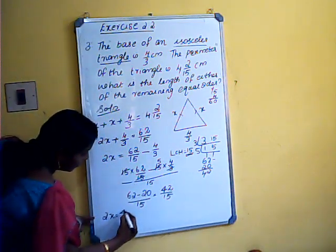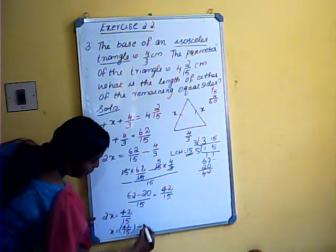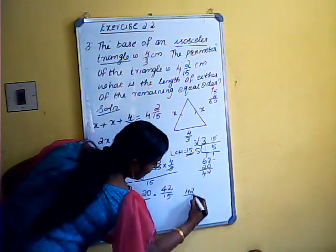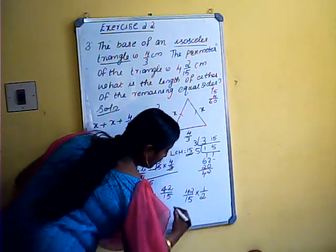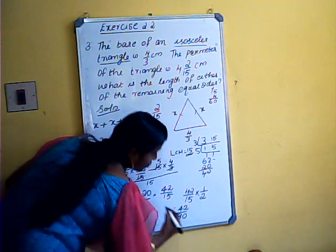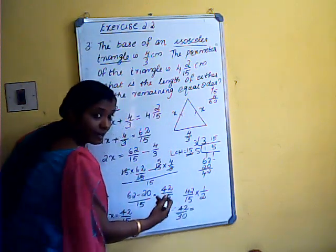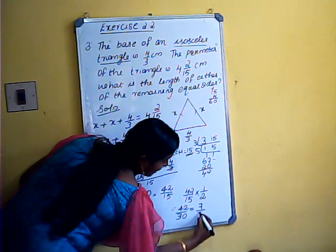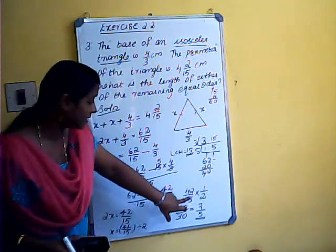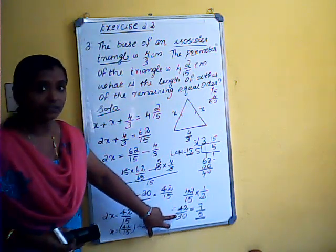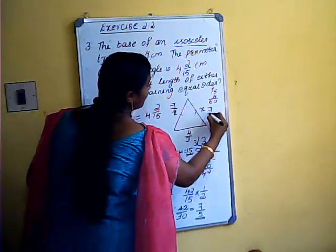So 2x equals 42/15. Therefore x equals 42/15 divided by 2, which is 42/15 multiplied by 1/2, giving 42/30. The common factor of 42 and 30 is 6, so dividing both by 6 gives x equals 7/5. The length of each equal side is 7/5 cm.